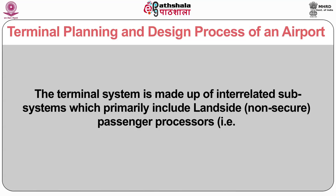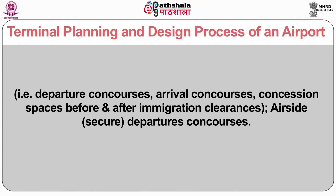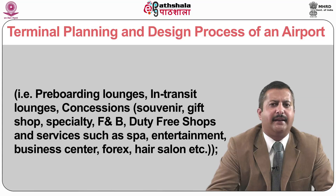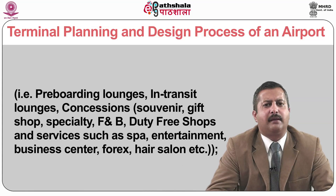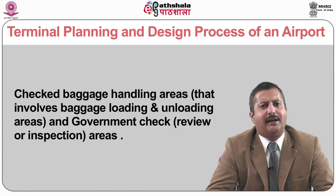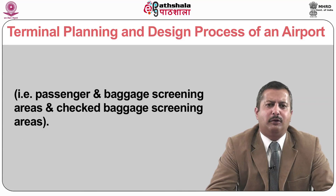The terminal system is made up of interrelated subsystems which primarily include landside non-secure passenger processes such as departure and arrival concourses, and concession spaces before and after immigration clearances. Air side secure departure concourses include pre-boarding lounges, in-transit lounges, and concessions including souvenir gift shops, F&B, duty-free shops, and services related to spa, entertainment, business centers, and forex. Checked baggage handling areas involve baggage loading and unloading areas, and government check areas which include passenger and baggage screening areas and checked baggage screening areas.